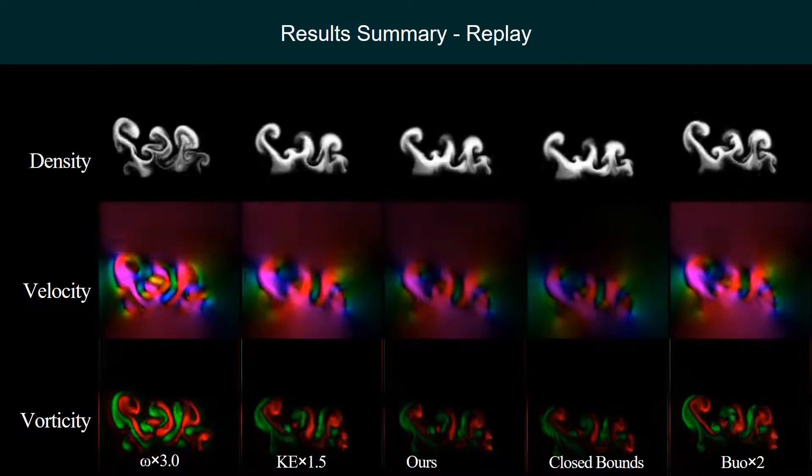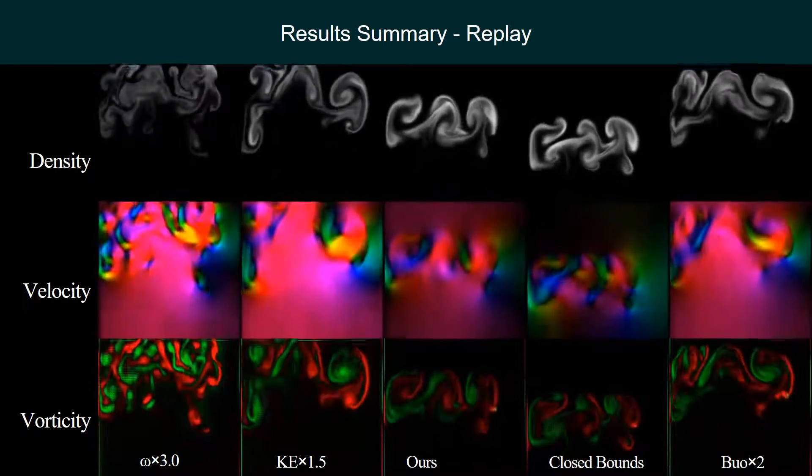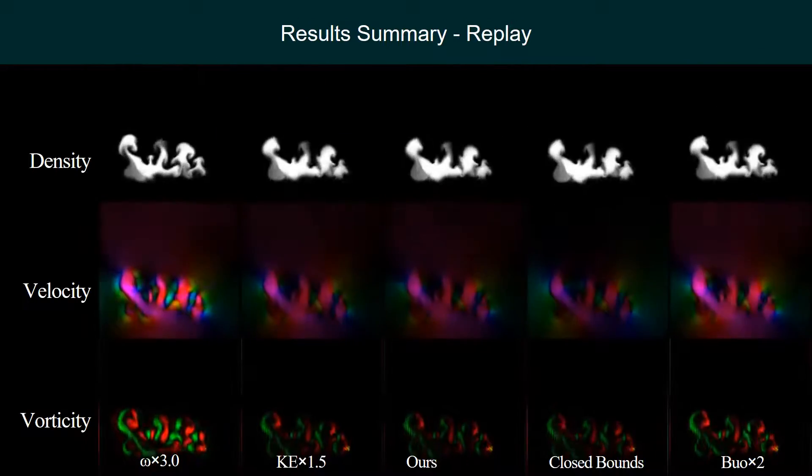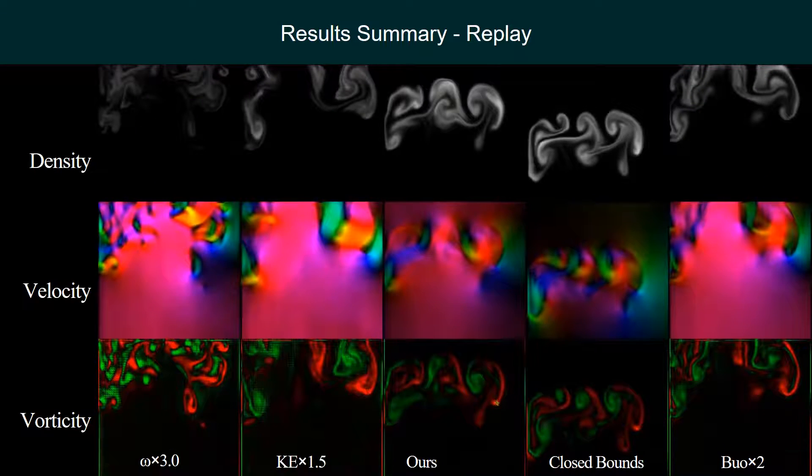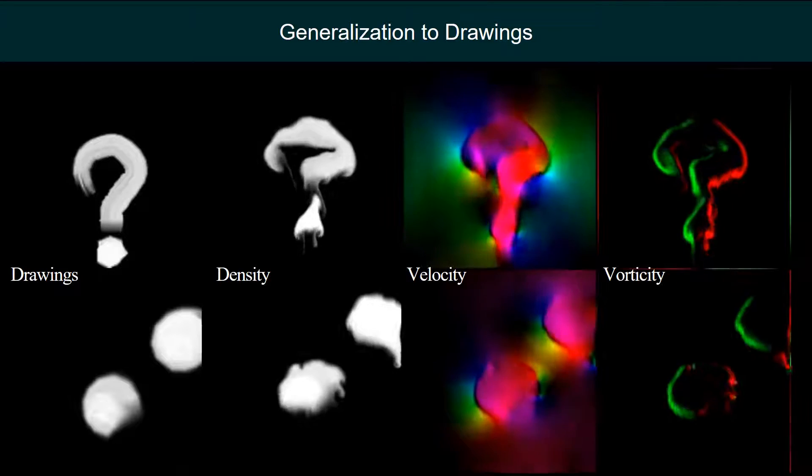We replay our 2D results generated under different conditions. Our results are generated using a single generative network. Our method generalizes to previously unseen shapes such as drawings.